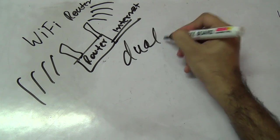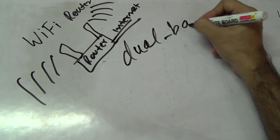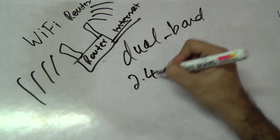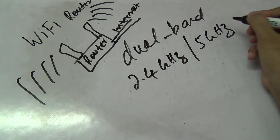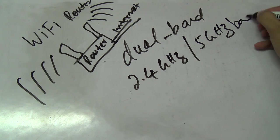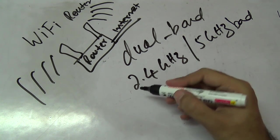Now we have also seen some routers that are dual band. Dual band routers are a little bit expensive. What they do is they support this 2.4 gigahertz as well as the 5 gigahertz band.